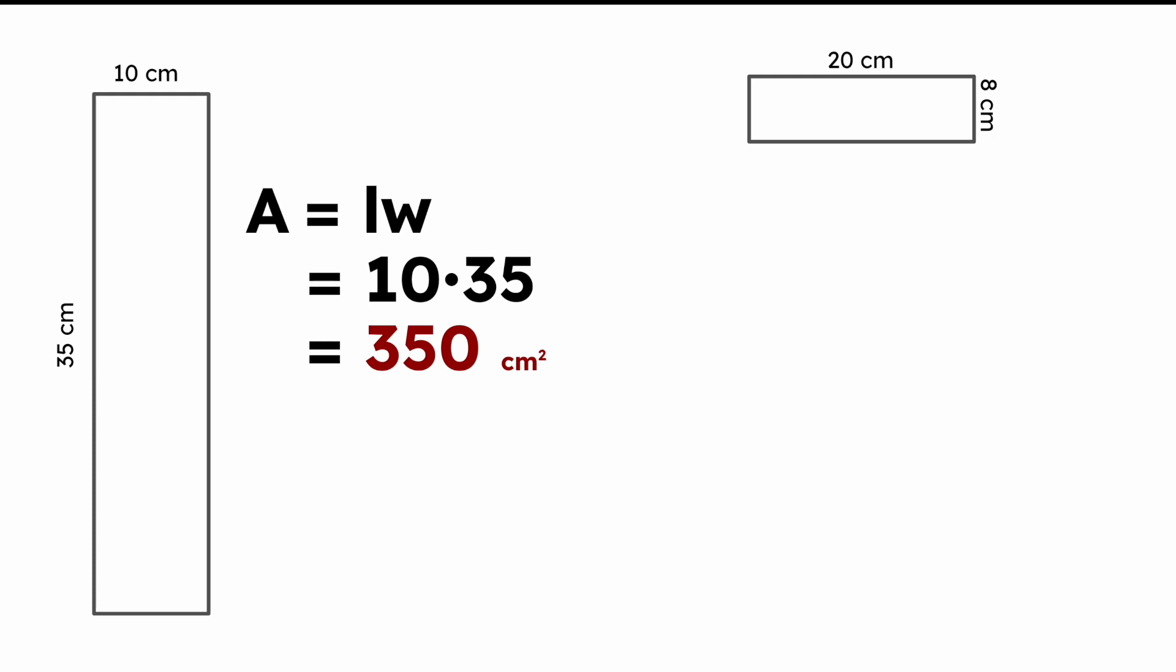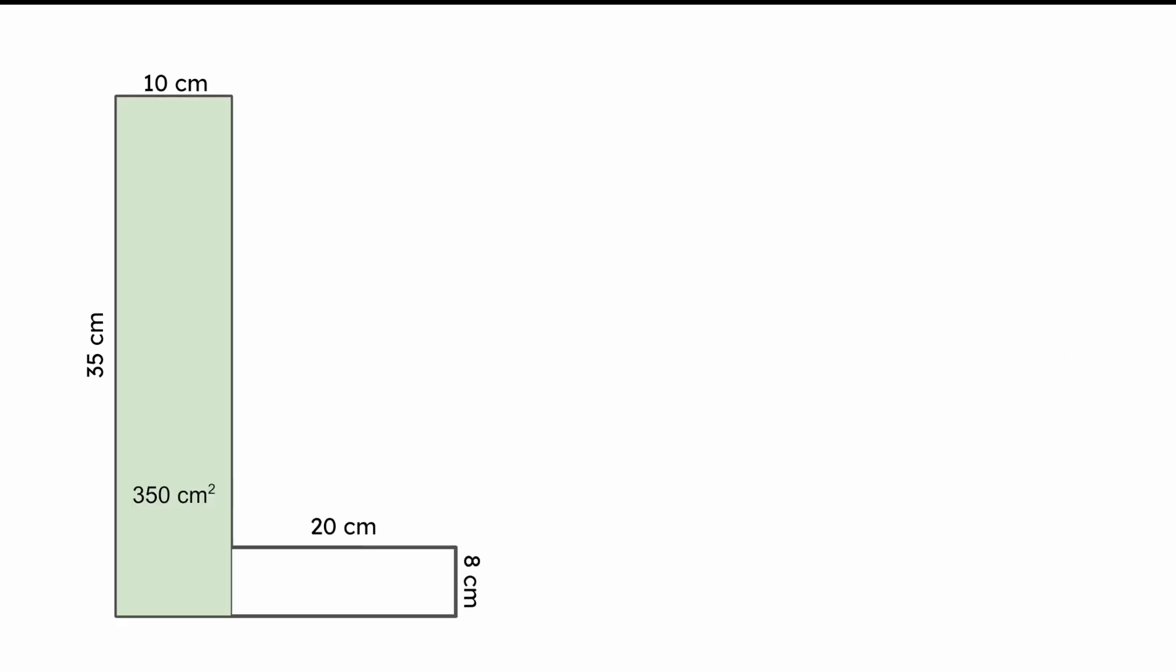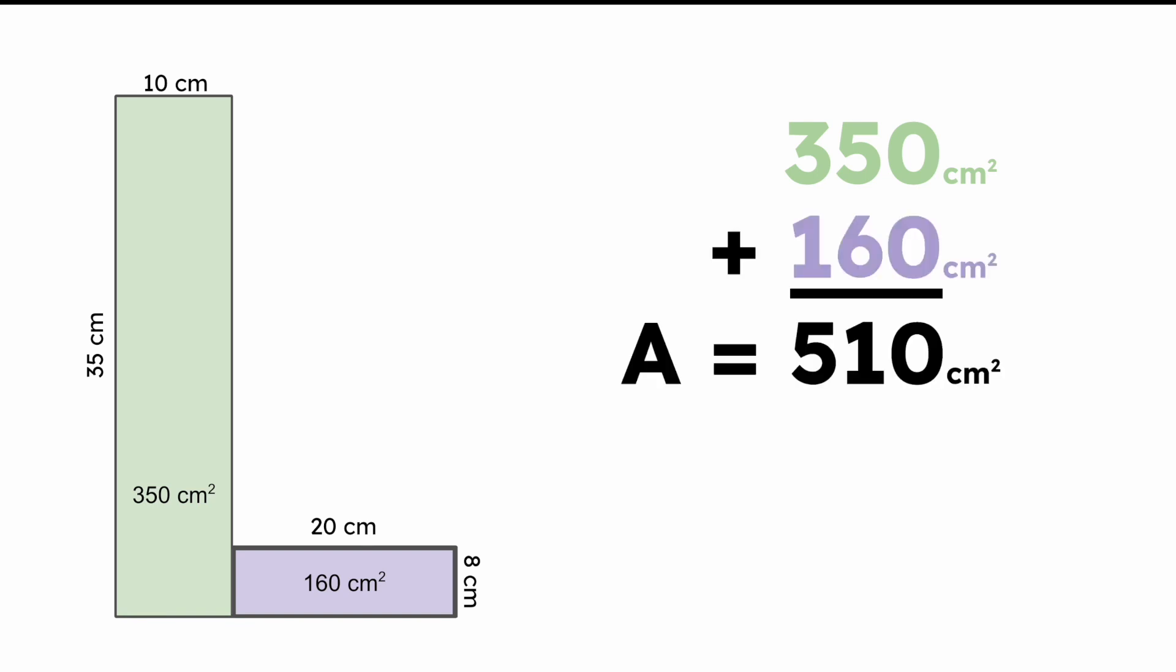The other one, 8 times 20, same deal. Probably do that in your head too, maybe. I don't know. You don't have to, hopefully, if you have a calculator. 160. So we have the two different pieces. What do you do? You add them. You have the green. You have the purple. You put them together. What do you get? Well, you just add them. 510. 350 plus 160. What do you get? 510. That's it for the area questions. They usually won't be much more challenging than that. Maybe a little more challenging. We'll get to the one at the end of this video is a little more challenging.